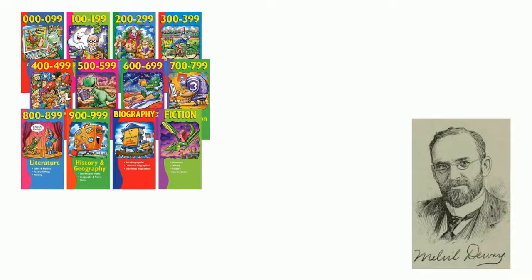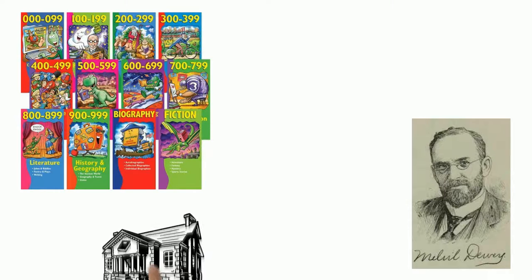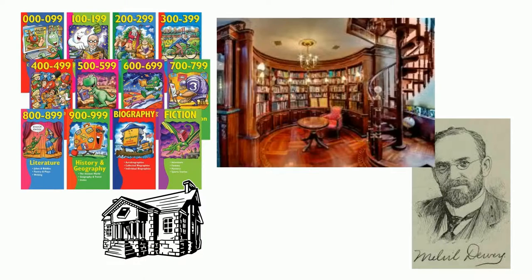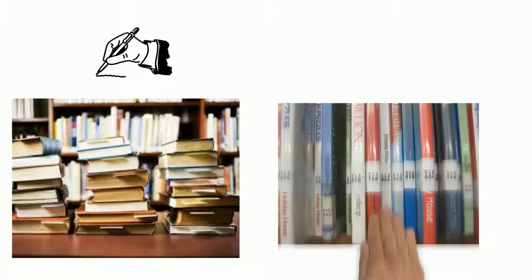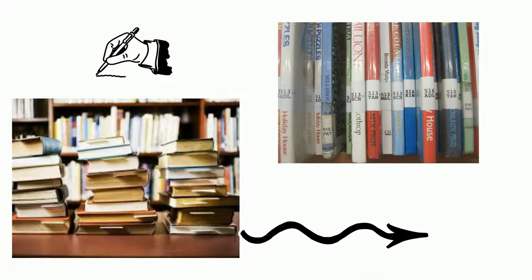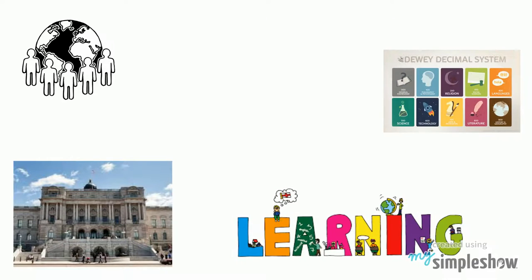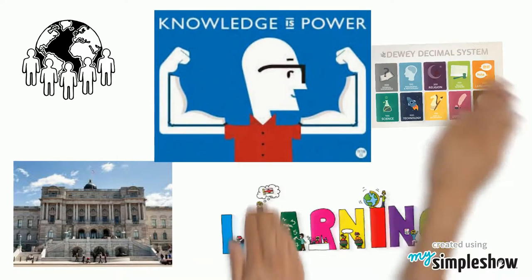Dewey invented the Dewey Decimal System when he was 21 and working as a librarian assistant in Amherst College. His work created a revolution in library science and set in motion a new era of librarianship. Libraries all over the world still use this system. Learning the system unlocks power.